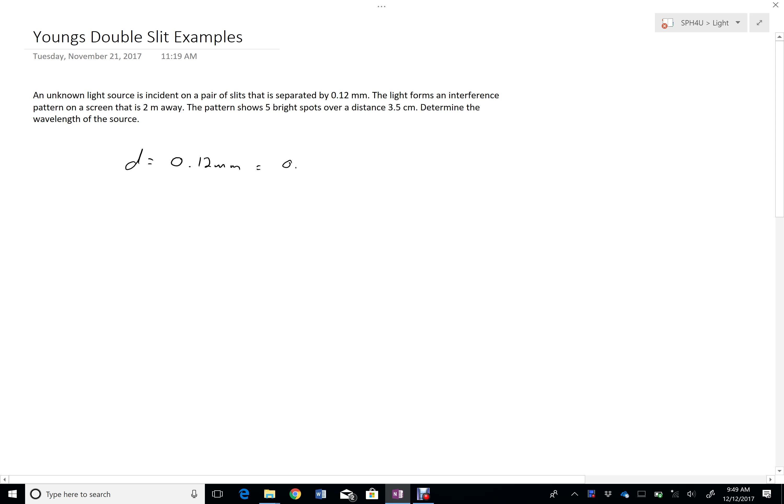or 0.00012, or if you want, 1.2 times 10 to the negative 4 meters. The light forms an interference pattern on a screen that's 2 meters away, L equals 2 meters.